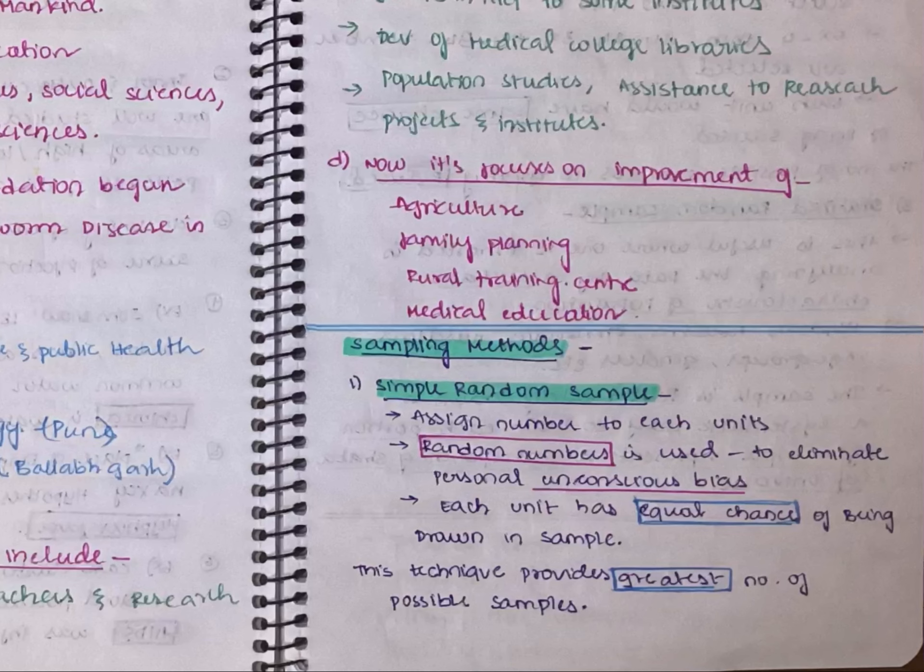Those people are not biased to any students in the class. They just select random numbers from 1 to 150. Everyone from 1 to 150 has equal chance of being drawn into the sample. Random numbers are used to eliminate this unconscious bias, and each unit has equal chances of being drawn into the sample.